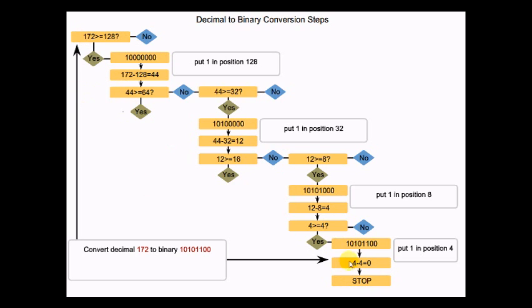So all these calculations, converting decimal 172 to binary, it's 10101100.